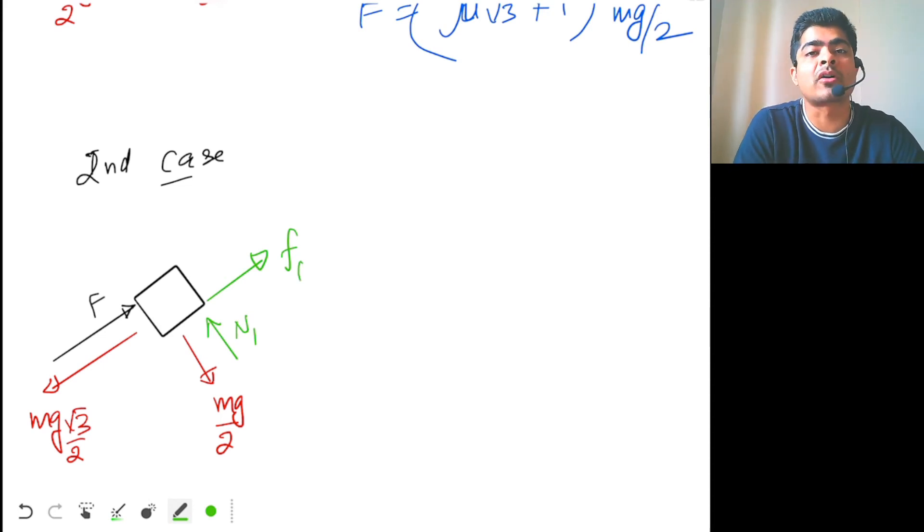Why upwards? Because the block is just trying to slide down. So n1 is equal to now mg by 2, so F1 is equal to mu n1, so that is mu mg by 2.